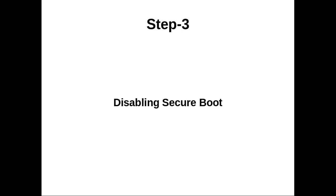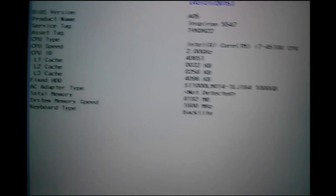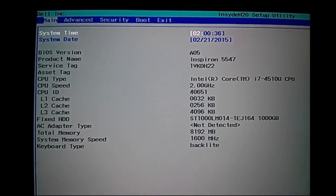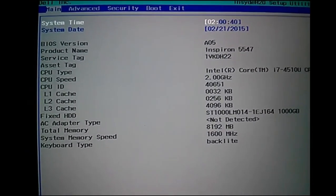Step 3: Disabling Secure Boot. I will show you how to disable Secure Boot in BIOS. We need to power on the system, then press the F2 button. This step will be different on different systems. On this system, press F2 while booting to go to the BIOS settings. At the top you can see: Main, Advanced, Security, Boot, and Exit.